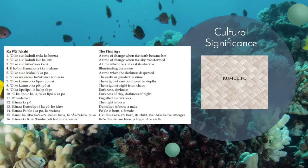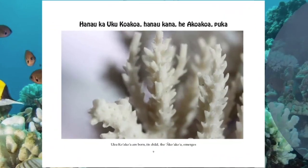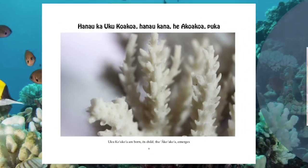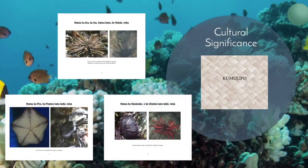In each va, or era of the Kumulipo, more and more organisms are born. The coral polyp is actually the first organism born, because it is the basic building block for life in the sea. Hanao ka uku koa koa, Hanao kana, Hanao ka a koa koa koa, puka — Born was the coral polyp, born was the coral, come forth. The next few lines introduce starfish, sea cucumbers, and sea urchins. The Kumulipo contains so much cultural and biological knowledge, and it really embodies the values of malama'aina, understanding the importance of caring for the environment and everything in it.